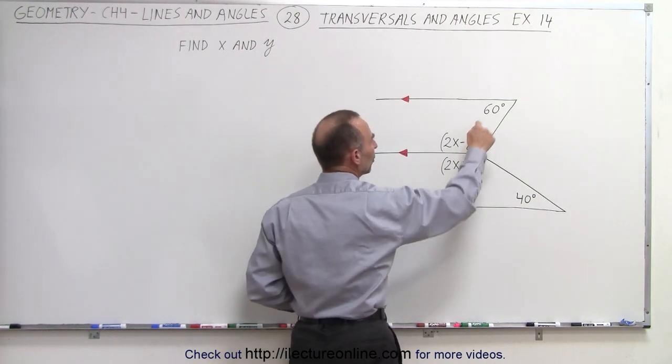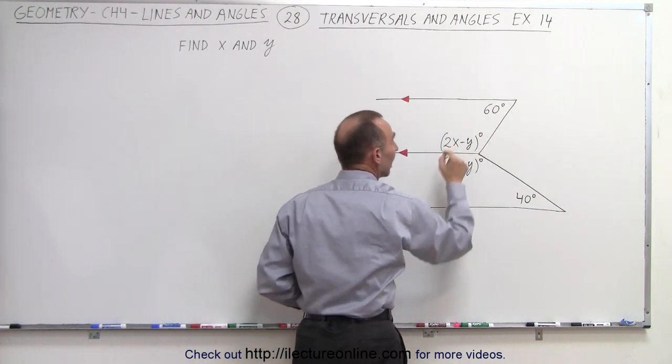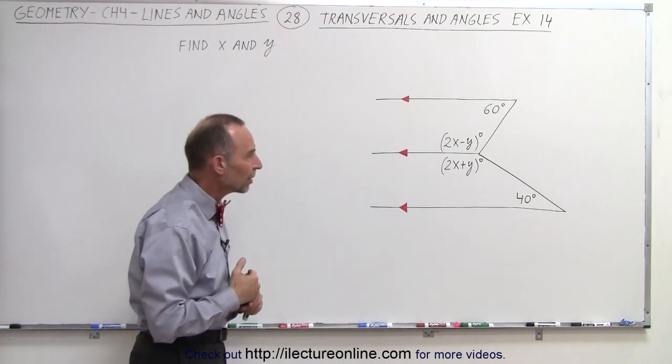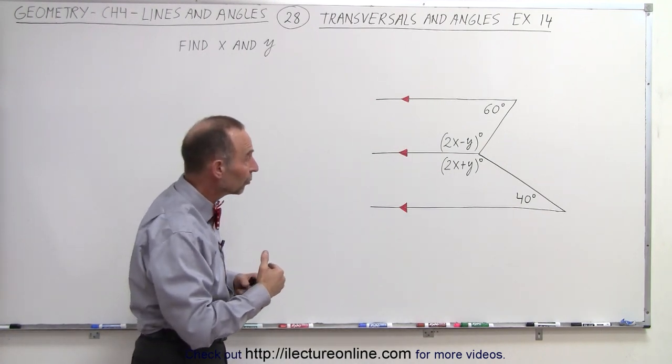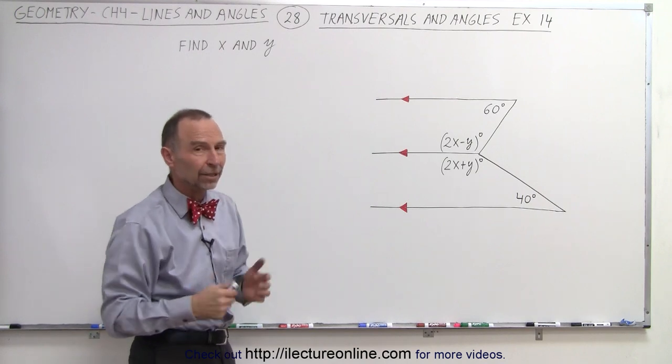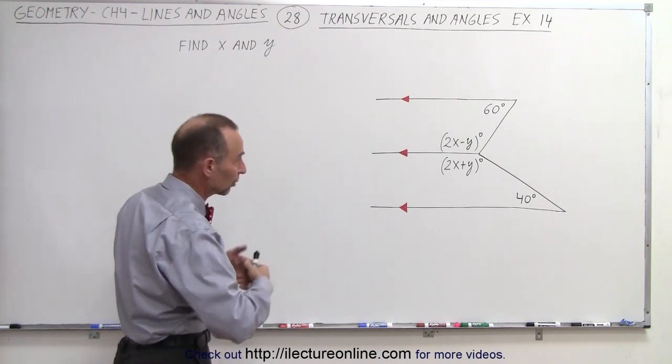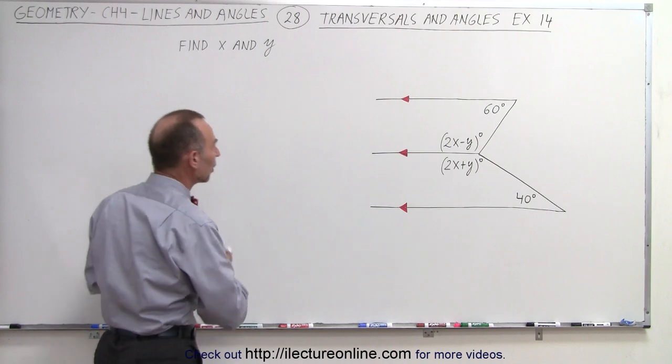This means we can look at these two angles and consider them interior consecutive angles, and interior consecutive angles means that they must add up to 180 degrees because their measures are supplementary or they're supplementary angles. In other words,